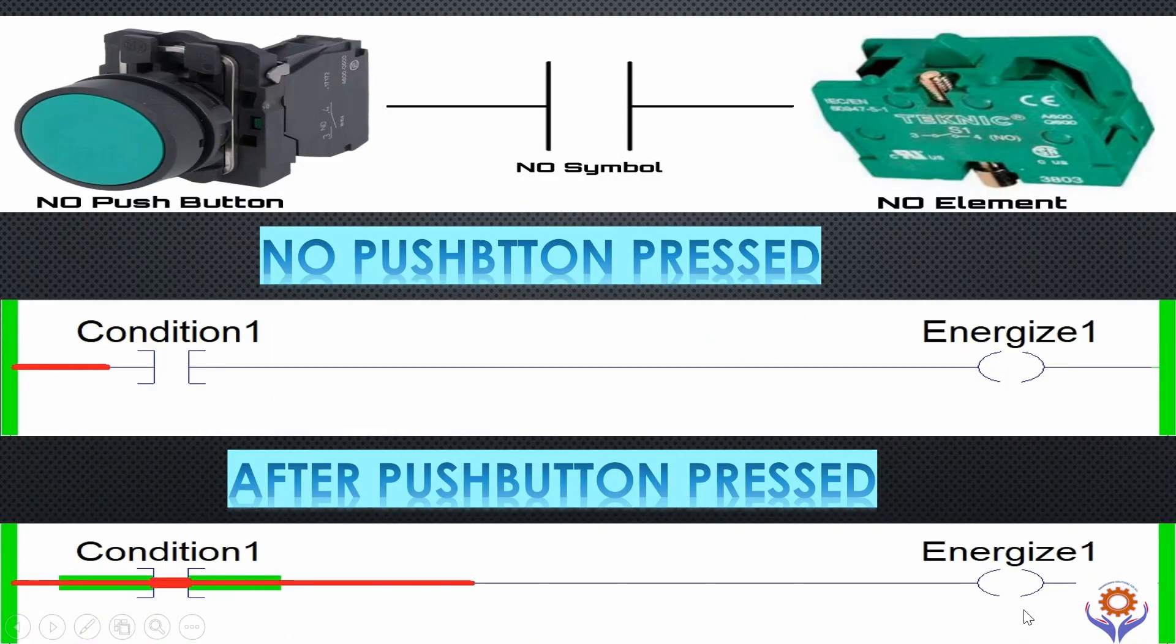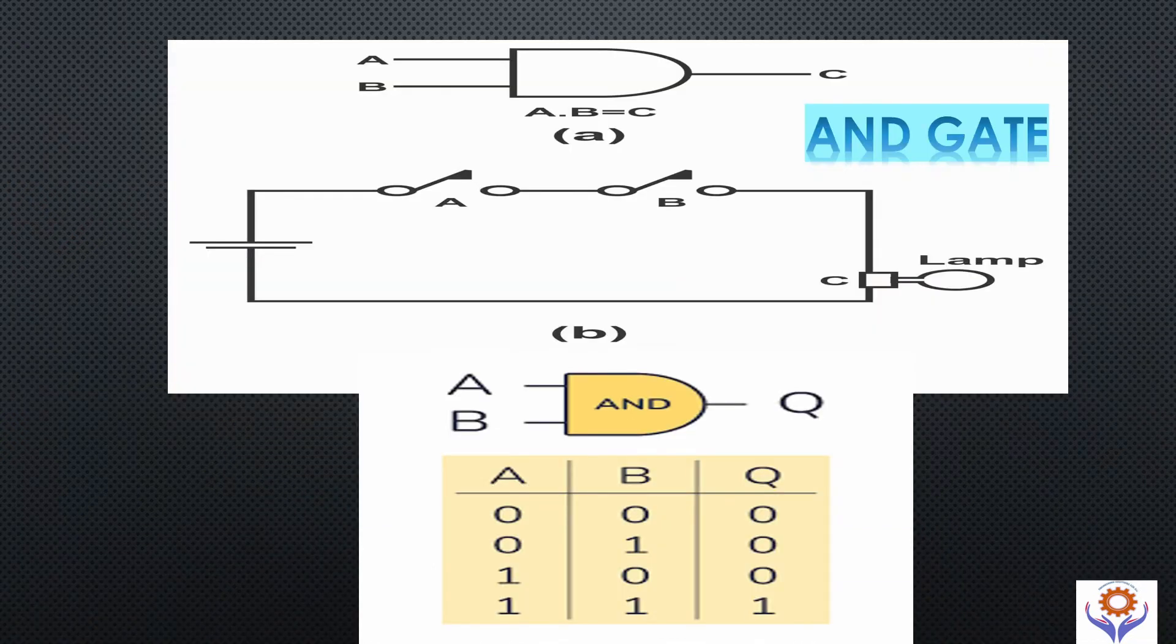Let us try with AND gates. If we see this drawing, both input A and B are connected in series with the lamp as output. Let us see the truth table. If you see both inputs are 0, then output becomes 0. If any of the input is 0, as well as the output becomes 0. If both inputs are 1, then output becomes 1.